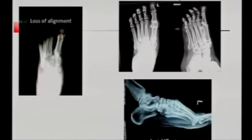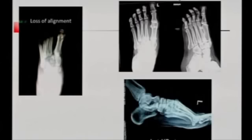Look at these signs. This is gross misalignment in those lines, or it may be a very subtle fleck sign. This is the subtle fleck sign here, or there is a gross lateral step-off here. These do indicate tarsometatarsal joint injuries.